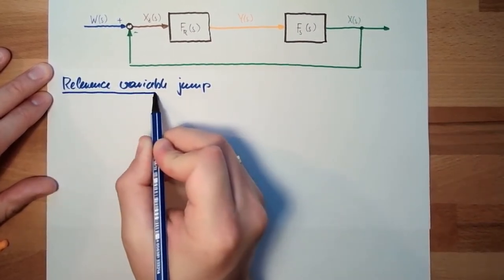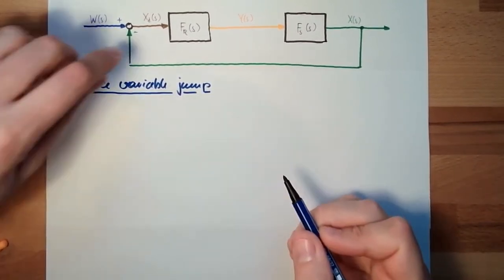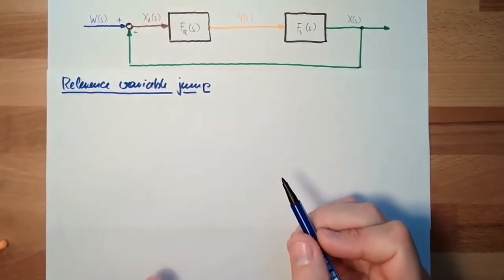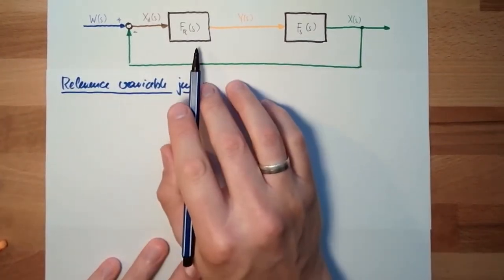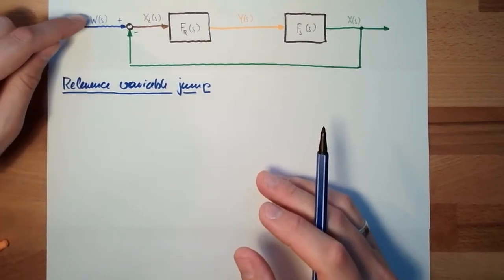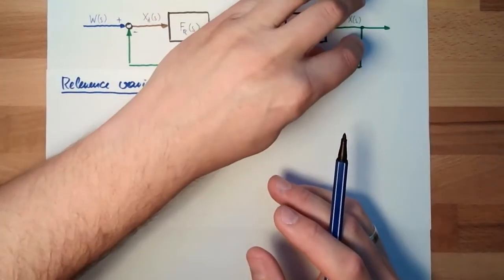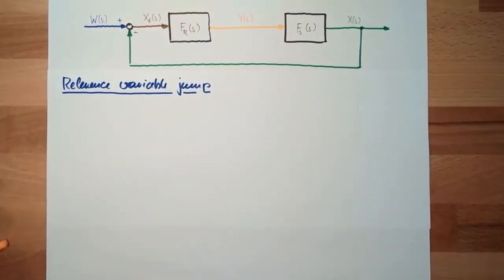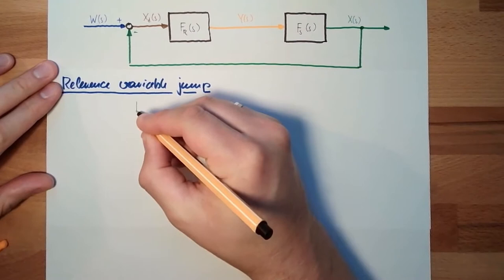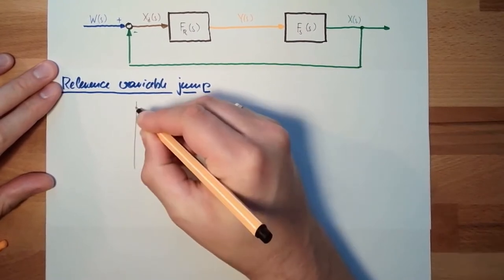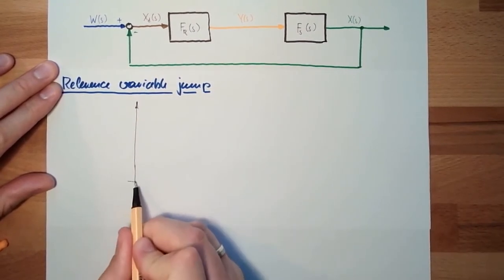Last time we said we are using this without controller. This time we are using the controller and the closed loop and everything. And we do a jump here and see how this is reacting. So this time we can tell something about the quality of the control loop, how good it is.